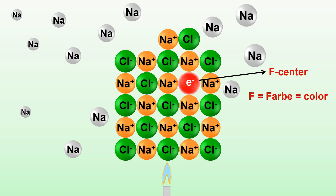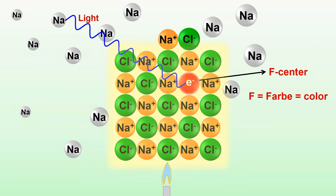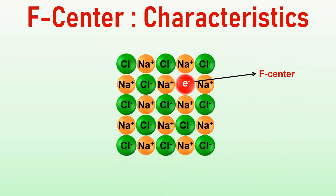The F-centers impart colour to the crystal due to excitation of electrons by absorbing a suitable wavelength of light. The initial crystal shows yellow colour due to absorption of the blue segment of visible light by the electron and transmission of the yellow part.